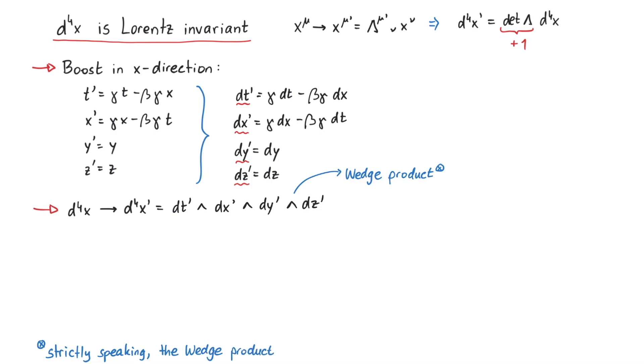First off, a wedge product can only connect two forms. So what is a form? A p-form is a totally antisymmetric 0p tensor.